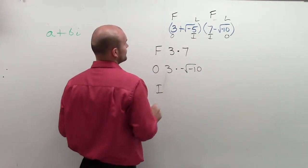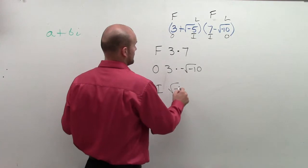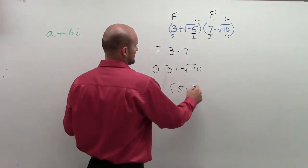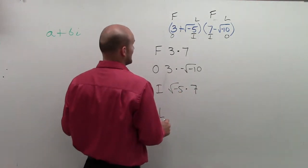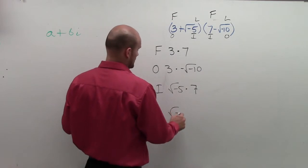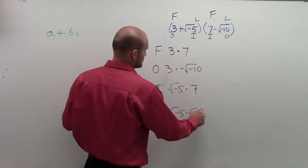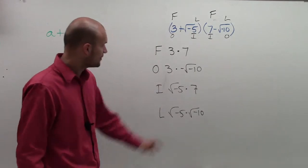Inner terms: we have square root of negative 5 times 7. And then we have the last, which is going to be the square root of negative 5 times the square root of negative 10.